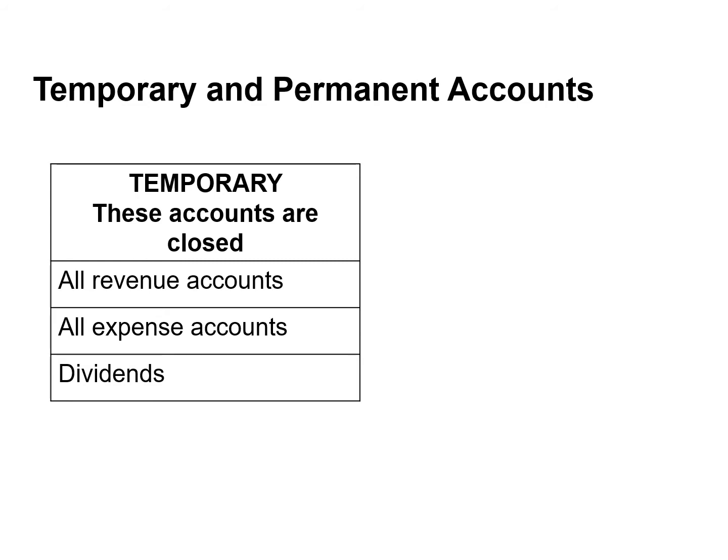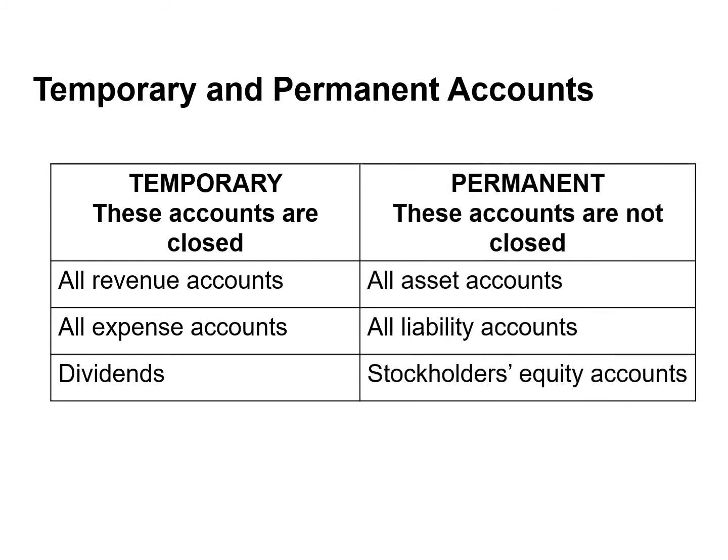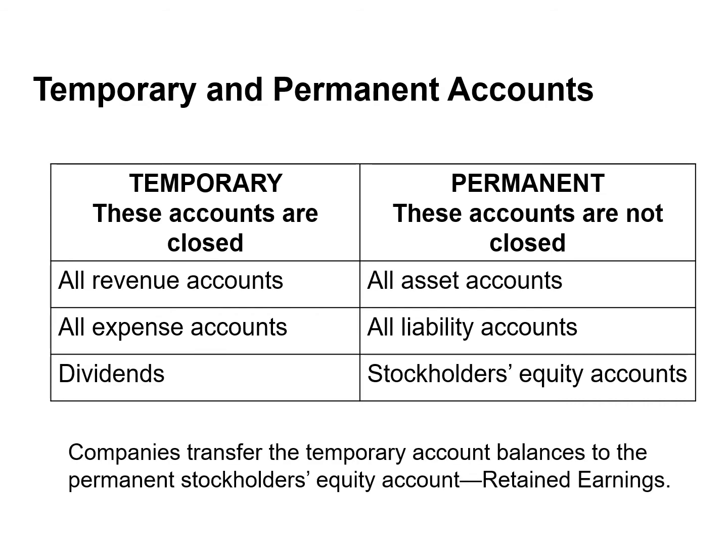Retained earnings is reported in the stockholders' equity section of the balance sheet. Because revenues, expenses, and dividends relate only to a given accounting period, they are considered temporary accounts. In contrast, all balance sheet accounts are considered permanent accounts because their balances are carried forward into future accounting periods. At the end of the accounting period, companies transfer the temporary account balances to retained earnings through the closing entries.